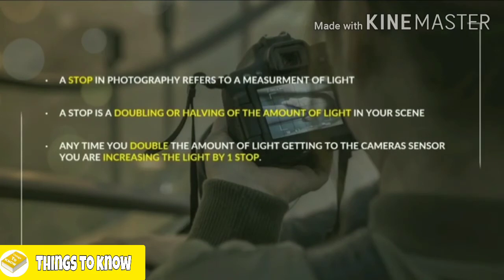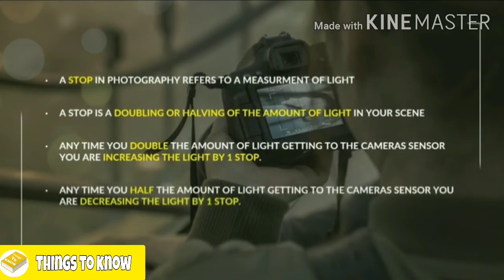Anytime we double the amount of light getting to the camera sensor, we increase the light by one stop. So if I say I added one stop of exposure to a scene, I mean I doubled the amount of light in that particular exposure. Anytime we halve the amount of light getting to the camera sensor, we decrease the light by one stop. Double the light is plus one stop; half the light is minus one stop.